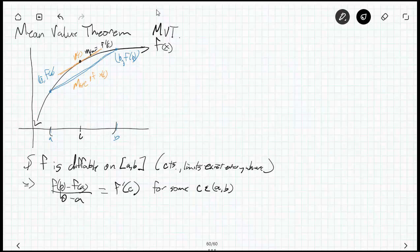Now, there's something called Rolle's theorem. Rolle's theorem is actually just a very specific case of the mean value theorem. I'm just going to write it down here because it doesn't take very long. Rolle's theorem, which you may hear, says this: if F of A equals F of B and F is differentiable on closed interval from A to B.